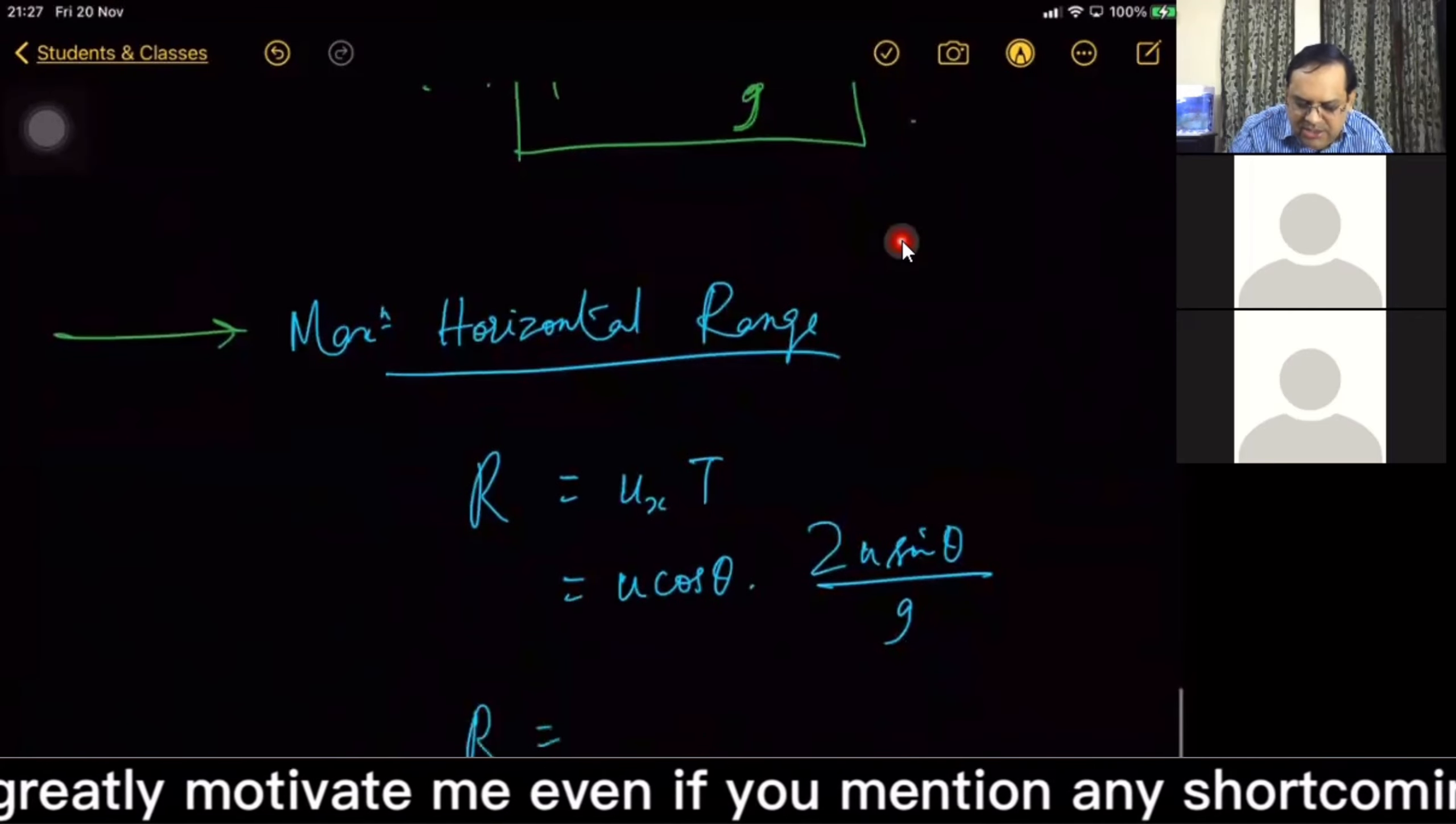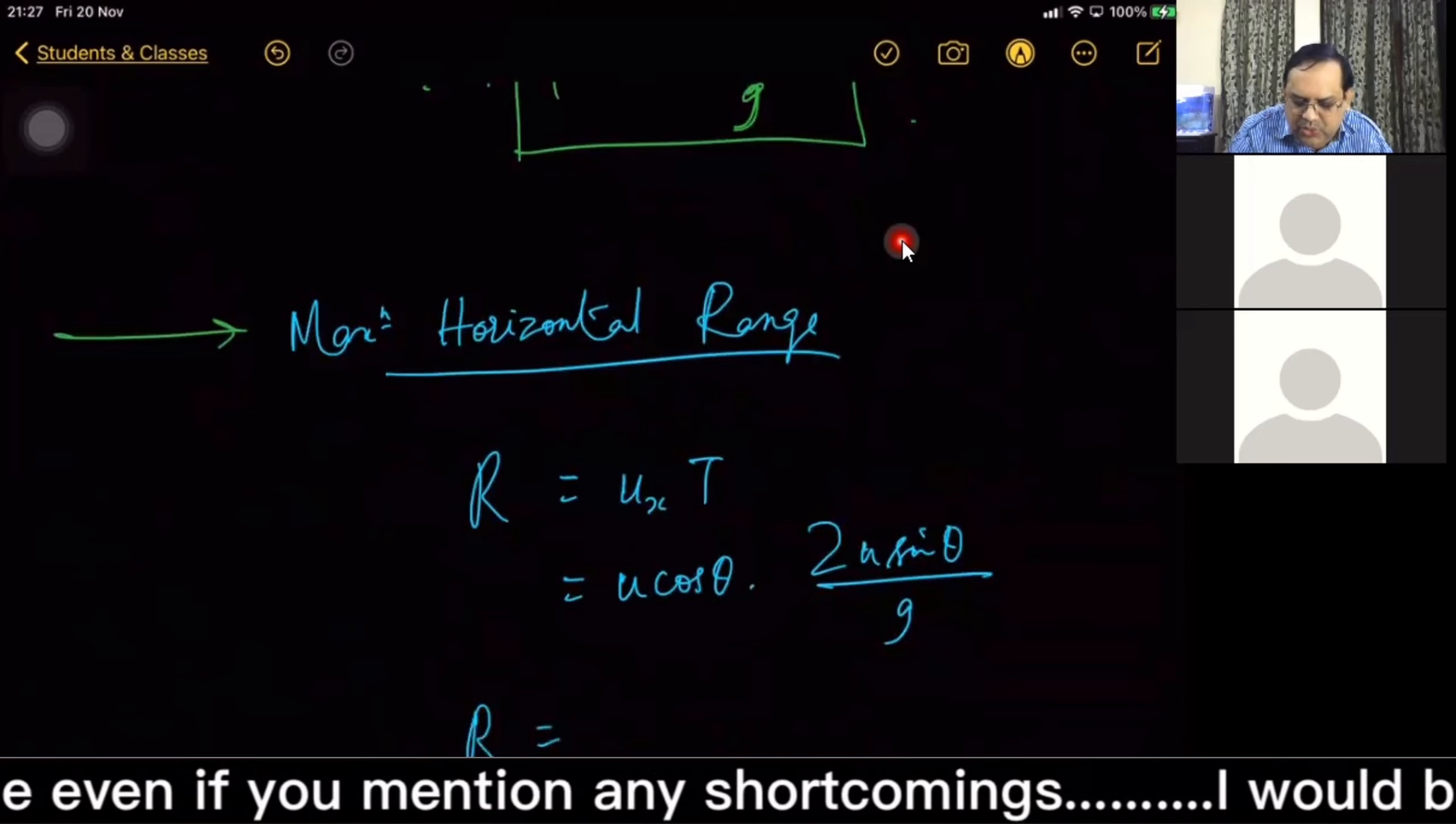So that's why I have done for a shortcut. So u cos θ, and T is 2u sin θ / g. Slight trigonometry, R = u² sin 2θ / g.